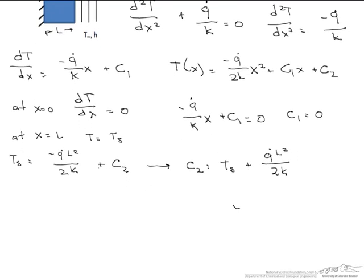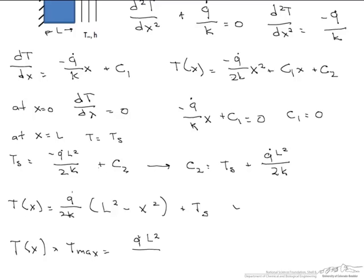Now we are left with this temperature distribution for our plane wall insulated on one side and subjected to convection on the other side. We are looking for Tmax and dT dx equals zero at x equals zero. The maximum temperature is at x equals zero. If we put in x equals zero into our temperature distribution, we find that Tmax equals Q dot L squared divided by 2k plus T sub s.